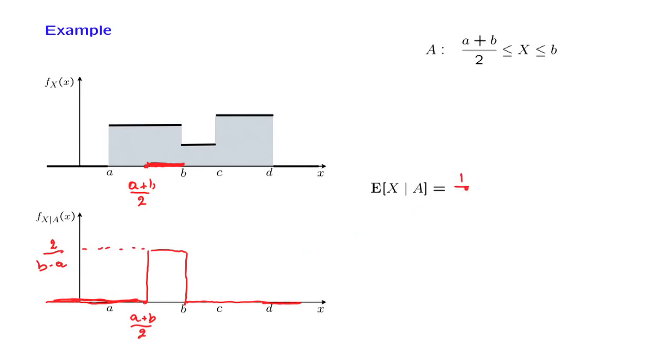And in this case, the midpoint is one half the left end of the interval, which is a plus b over 2, plus one half the right endpoint of the interval, which is b. And so this evaluates to 1 fourth times a plus 3 fourths times b.